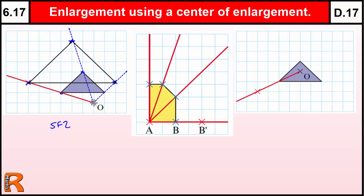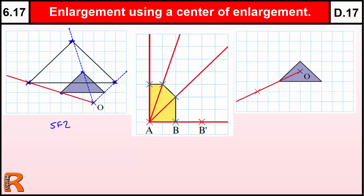Now if we move the centre of enlargement to a different position, there are three possible places we could have it. We could have it outside the shape — that projects the image away from the original. Or we could have it on the shape itself. If the centre of enlargement is on the shape, this point doesn't actually move; it stays in the same position because it's zero distance away from the centre. When labelling points, if this was the original B, the enlargement becomes B dashed — A dashed for A — it's just in the same position.